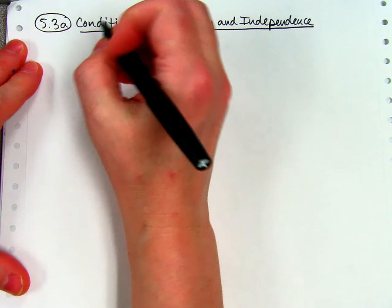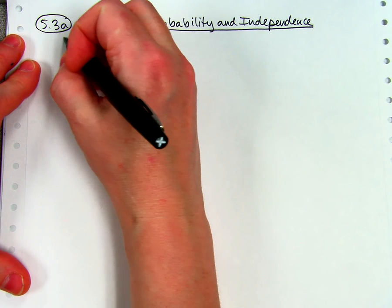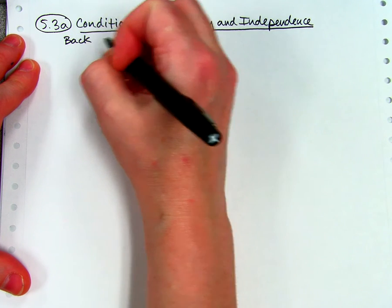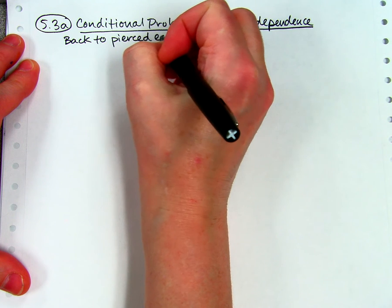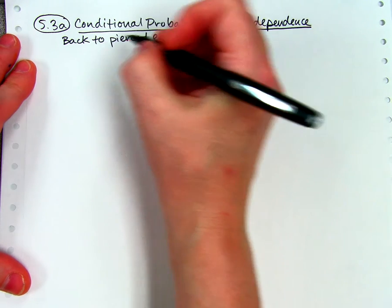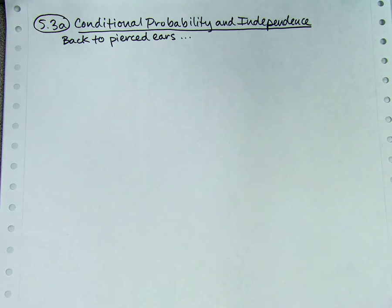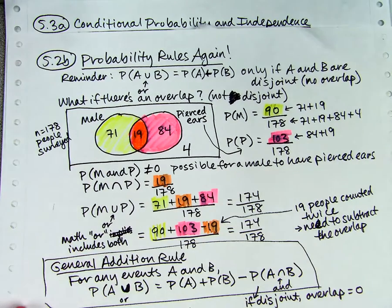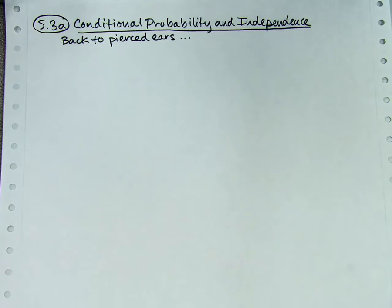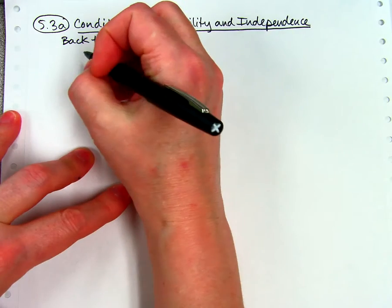We're going to continue an example we did in 5.2b. Let's go back to the Pierce-Deers scenario. There's more we can do with this. We did it with a Venn diagram before. And this time I'm going to do it with a two-way table just to show you the difference.